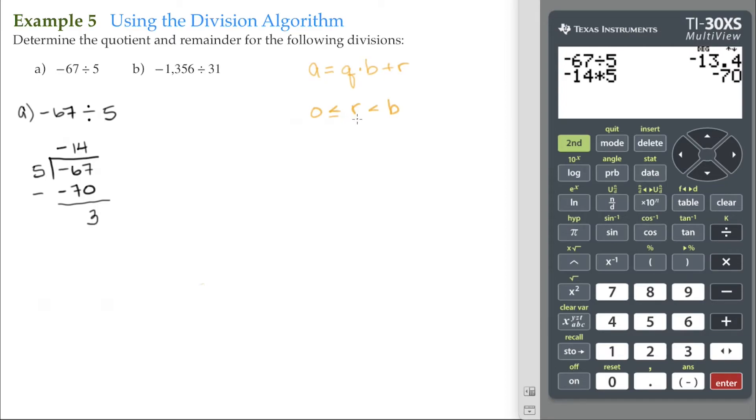Following the rule, our remainder has to be greater than or equal to 0, which it is, and less than the divisor of 5. So 3 is greater than or equal to 0 but less than 5.